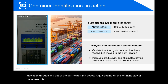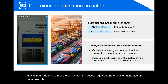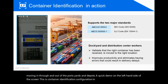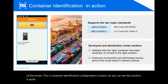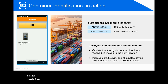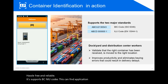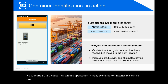On the left-hand side of the screen, this is the container identification configuration in action. As you can see, the solution is quick, hassle-free, and reliable. It supports BIC and ILU codes. This can find application in many scenarios — for instance, it can be used in docks and yards to validate that the right container has been received.